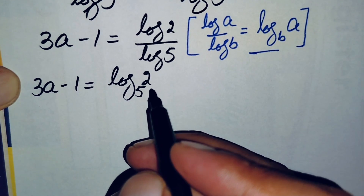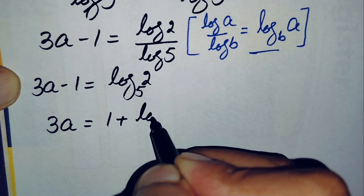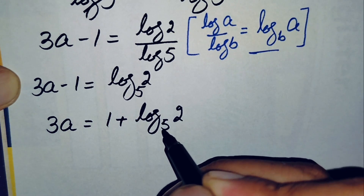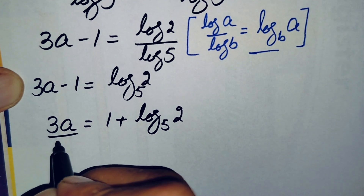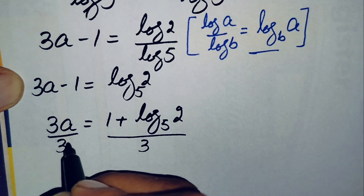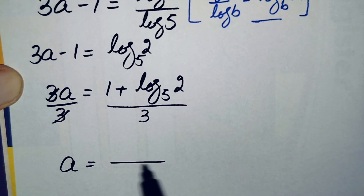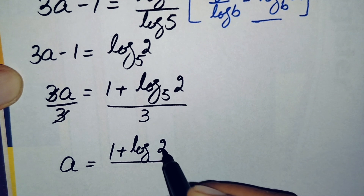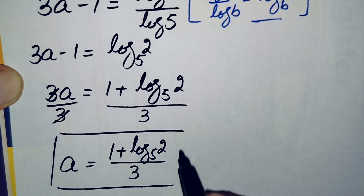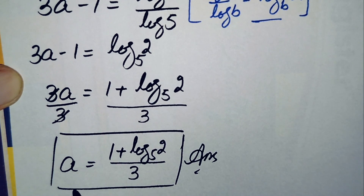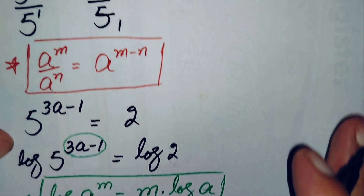We move the negative 1 to the right-hand side, making it positive 1. The equation becomes 3a equals 1 plus log base 5 of 2. Dividing both sides by 3, we get a equals (1 plus log base 5 of 2) divided by 3. This is our answer.